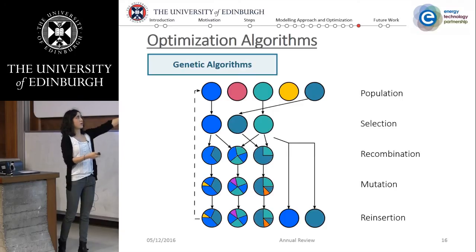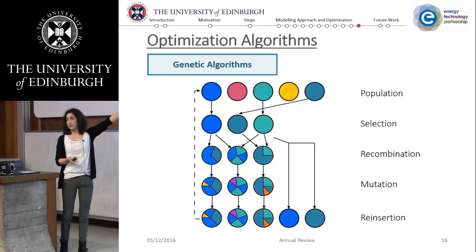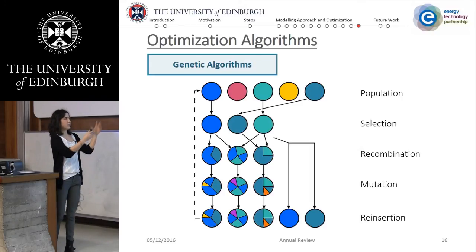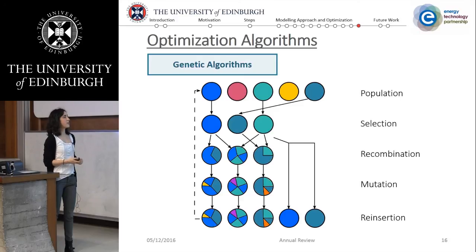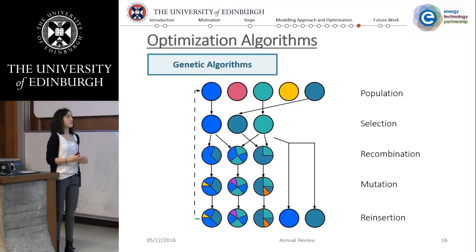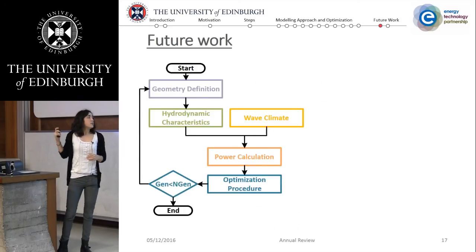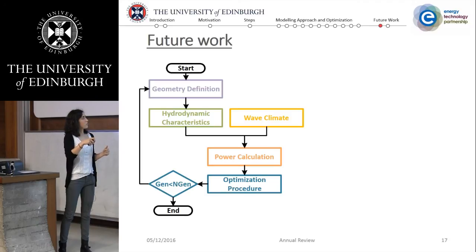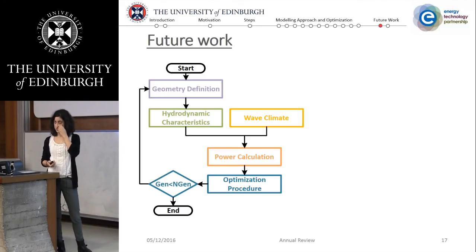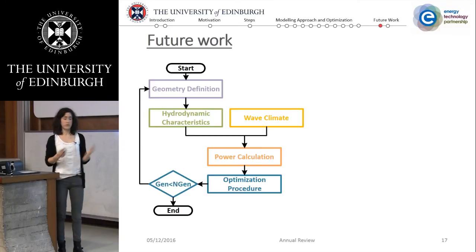The children generation becomes our new population, which we analyze for power extraction — a new set of geometries analyzed again. The main advantage of using genetic algorithms is that you can analyze various geometries simultaneously. The main challenge is defining the mutation rate in a way that converges to an optimal solution without converging to a local optimum. We define a number of generations to run through and hope it converges to an optimal shape.